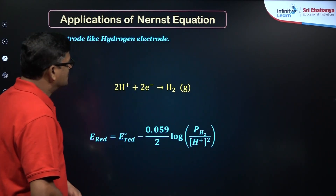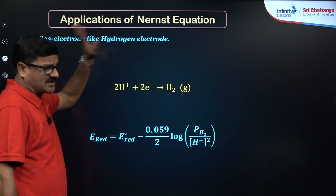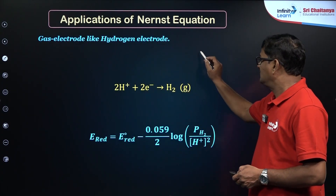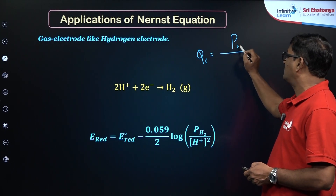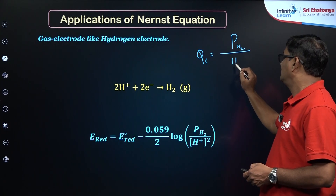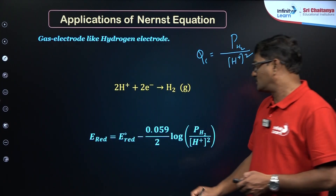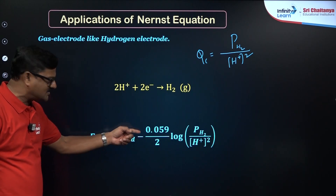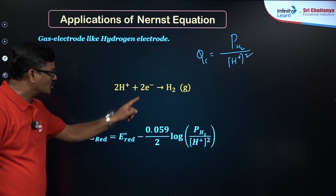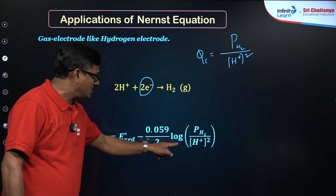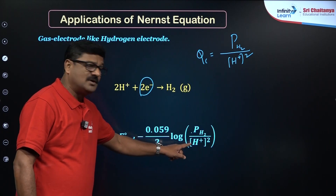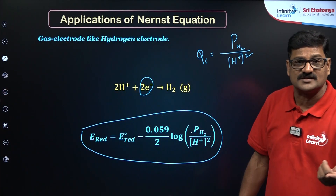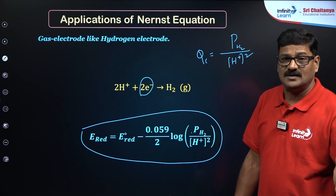The Nernst equation also applies to gas electrodes. For the hydrogen electrode: 2H⁺ + 2e⁻ → H₂, the reaction quotient is Q = P(H₂) / [H⁺]². The electrode potential is: E = E° - (0.0591 / 2) log(P(H₂) / [H⁺]²). From this, if the pH of the solution is given, you can also calculate the electrode potential.